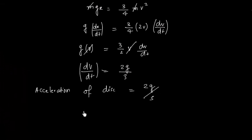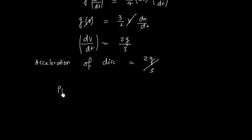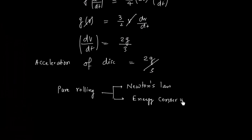So whenever you have a problem of pure rolling, it can always be done by two methods. One is writing Newton's law, another way is to write energy conservation.